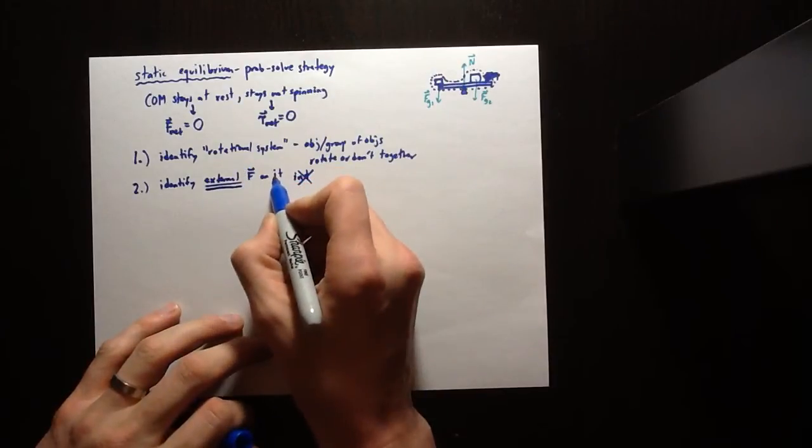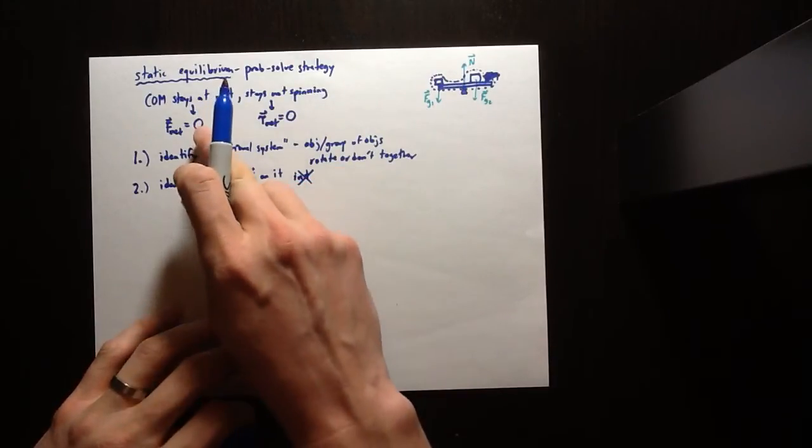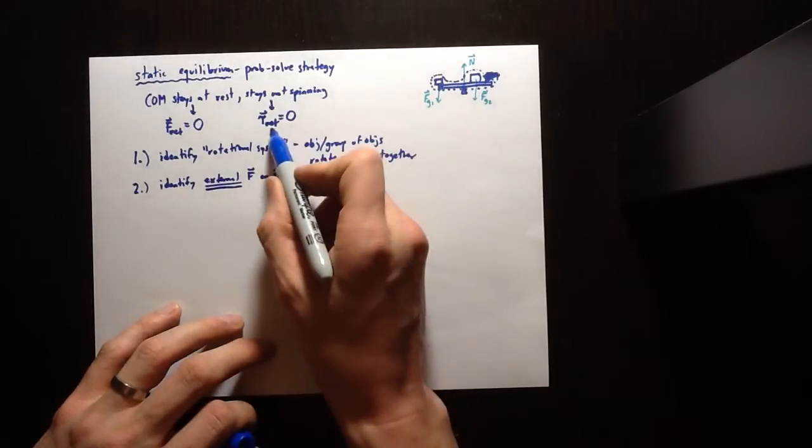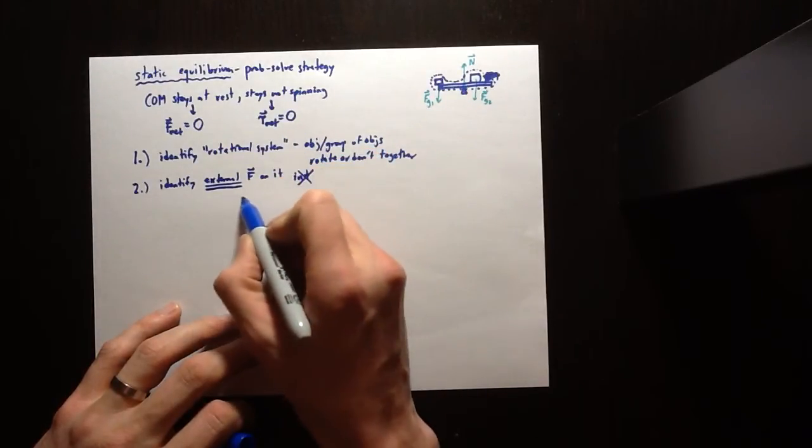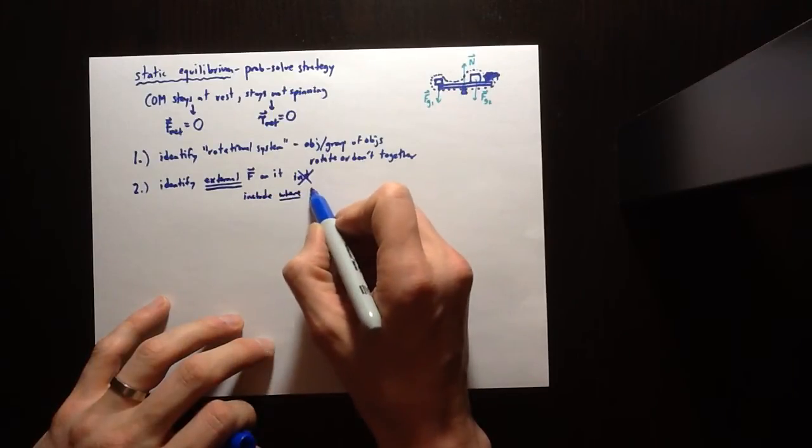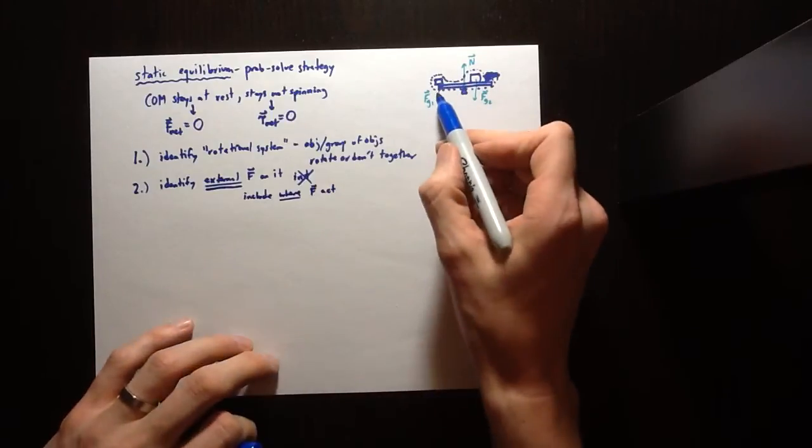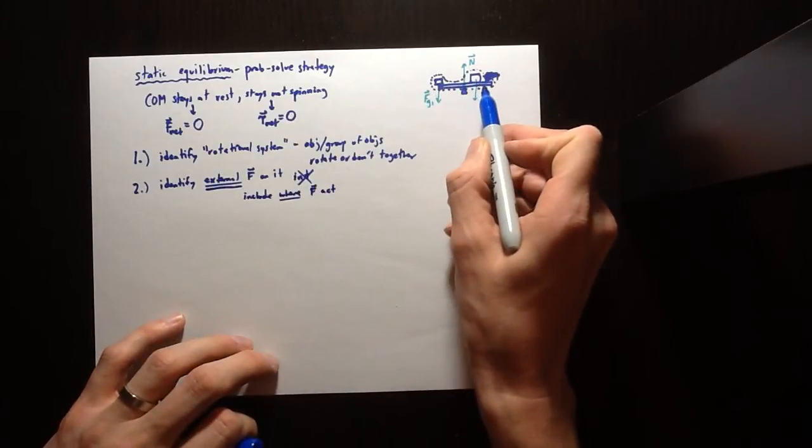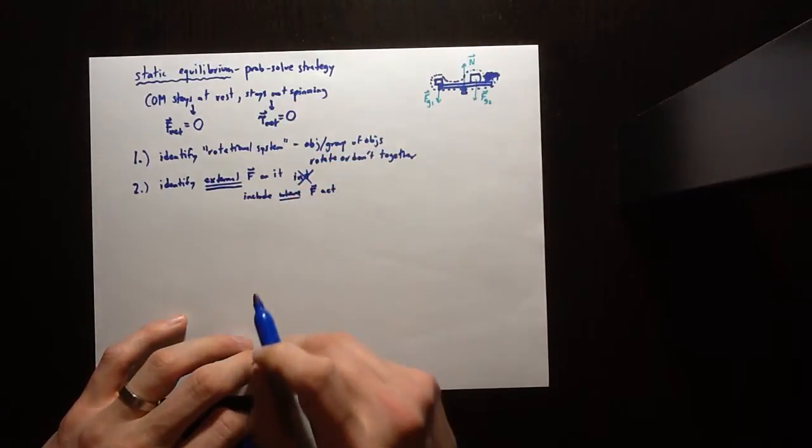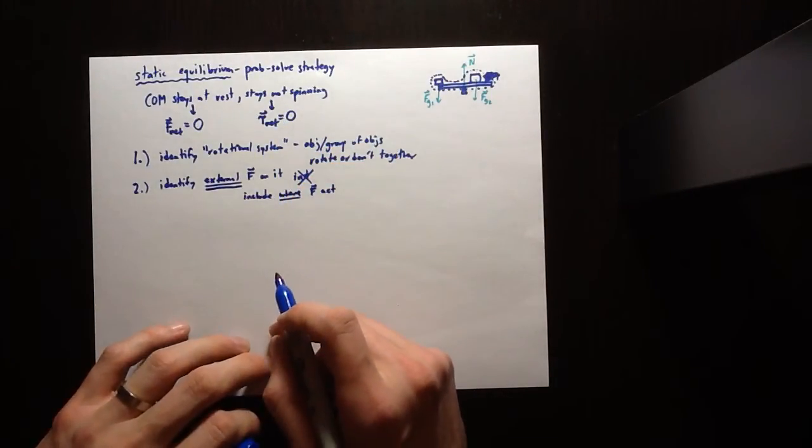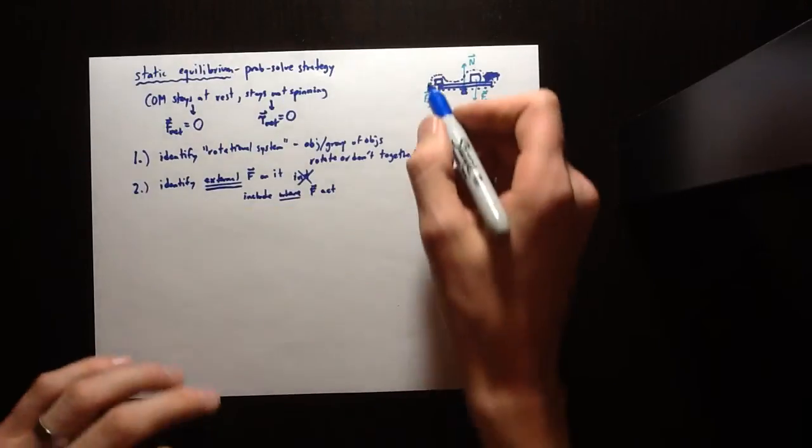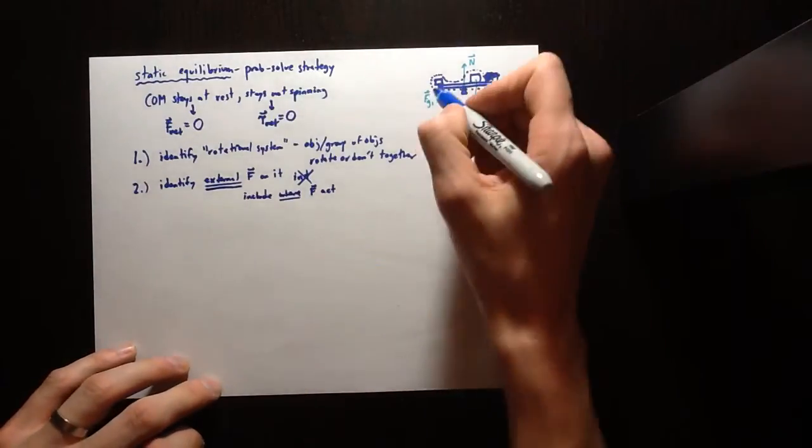Now, identifying external forces on it is really important. That's going to help you with your net force already. You're just going to kind of look at all those forces and how they get to be the net force. But remember, for net torque, it's really important where those forces act. So we want to make sure to include where the forces act. So this force acts over here. This force acts over here. This force acts over here. That's going to be important when you're doing your torque stuff. Because when you do torque, the location of the application point matters.